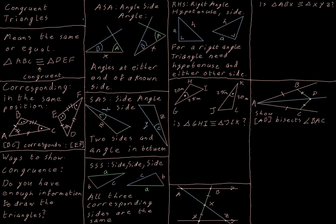Now we are going to look at congruent triangles. First of all, congruent just means equal — it means that two triangles are the same. The only thing that can be different about them is that they can be rotated around.